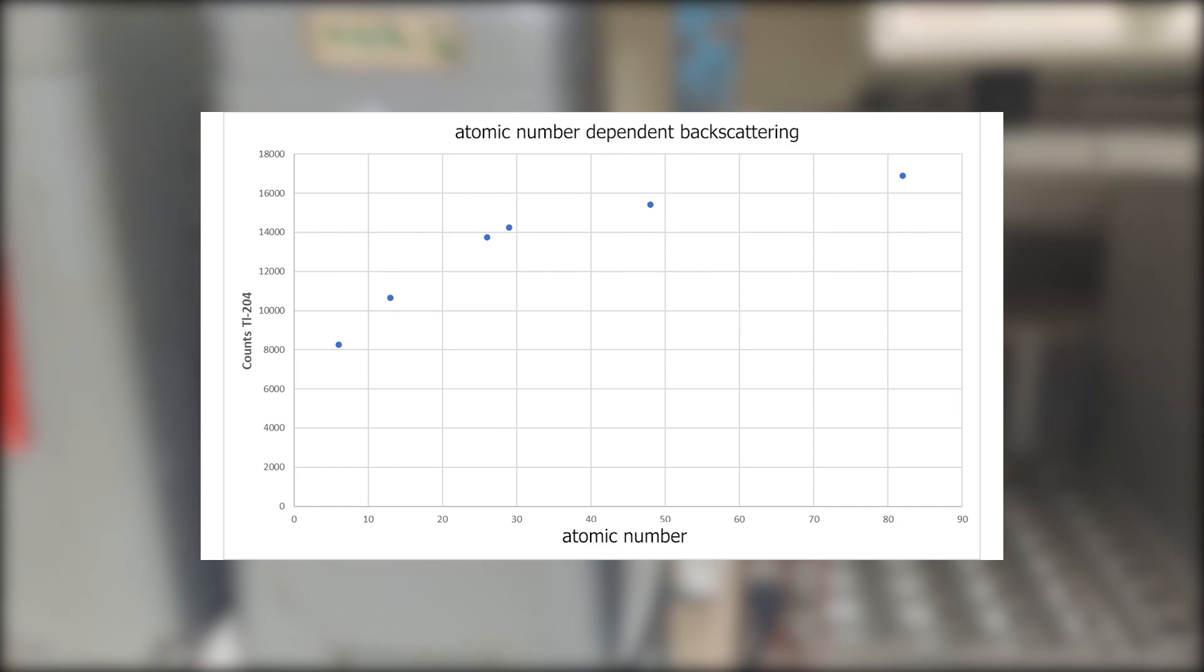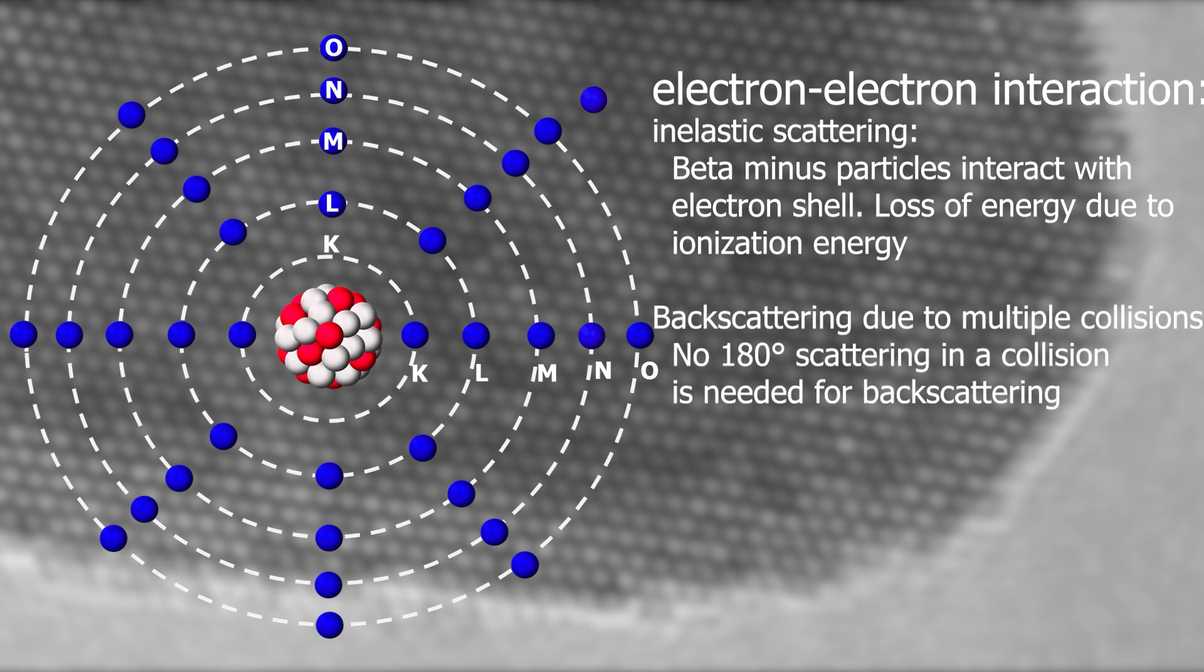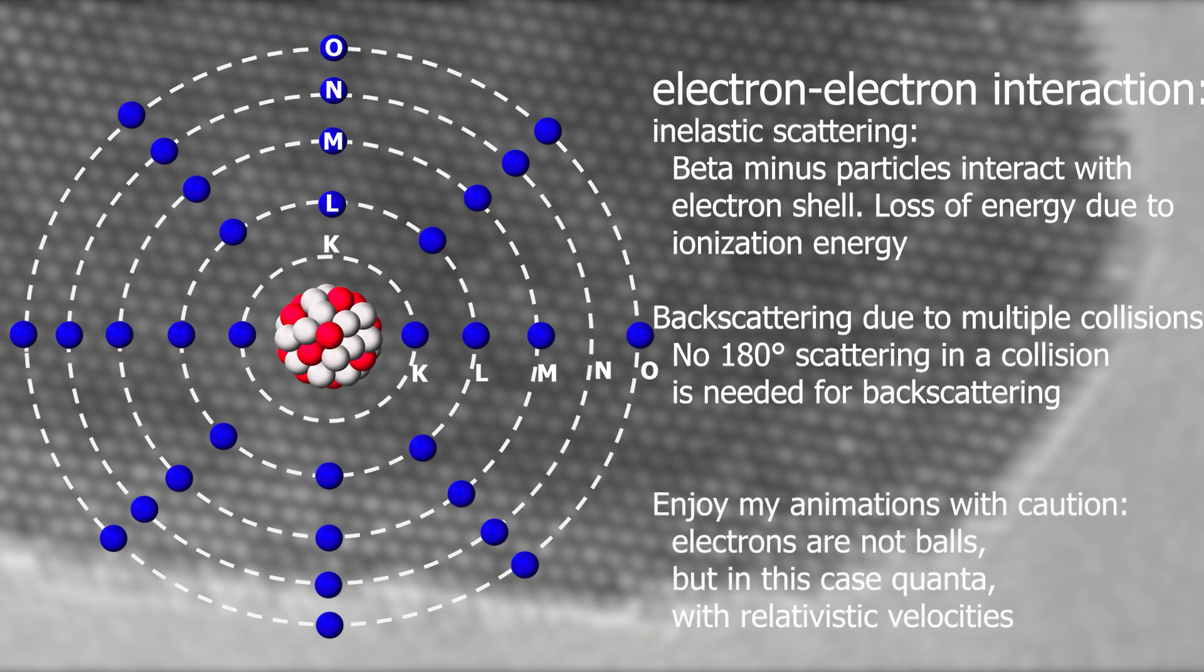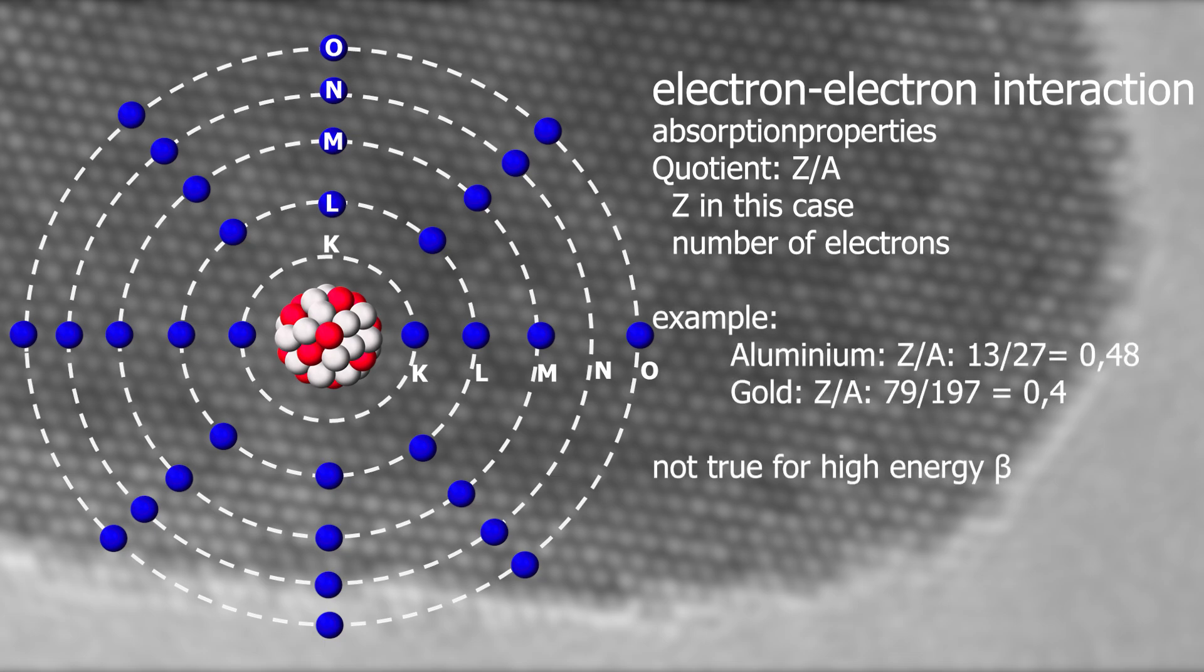Backscattering is influenced by two factors: electron-electron interactions, which are unrelated to atomic number, and nucleus-electron interactions. In the electron-electron interaction, the absorber's atoms are ionized, and this interaction is solely dependent on the electron density of the absorber, i.e. the number of electrons per mass unit. If this were the only effect, gold would be worse of an absorber than aluminum, because of the lower charge-to-mass ratio.